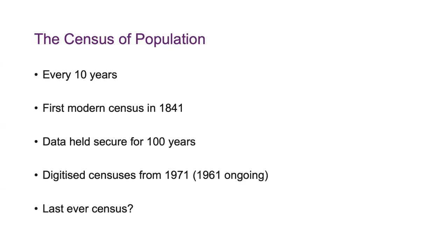The Census of Population in the UK is every 10 years. The first modern Census we would recognise as similar to 2021 started in 1841. There were censuses before that, back to about 1815, but they were more ad hoc. The data is held secure for 100 years and then the original papers are released to the public. We have digitised censuses from 1971, and there is actually data out there from 1961 now.